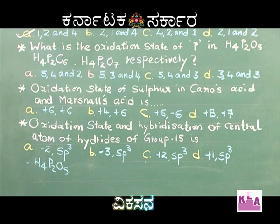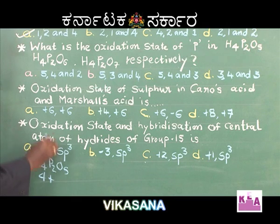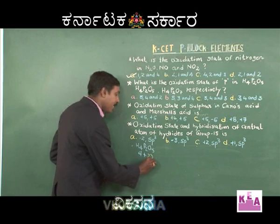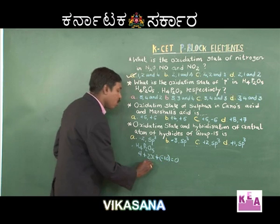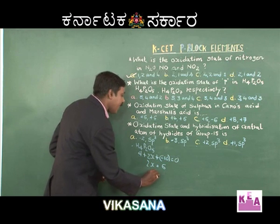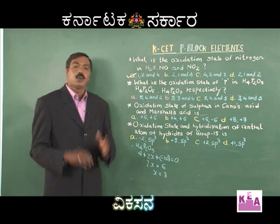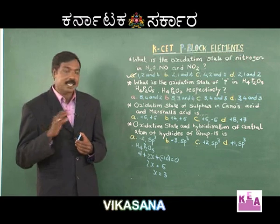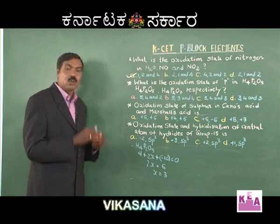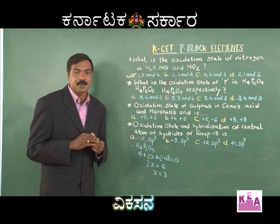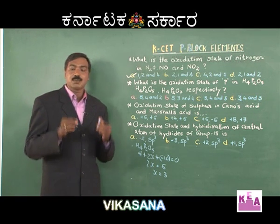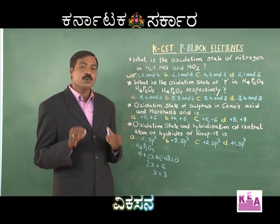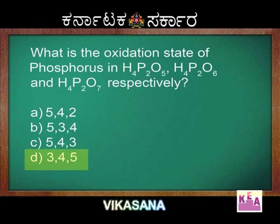The oxidation state of hydrogen is +1, so 1 × 4 = 4. For phosphorus: 4 + 2x + (−2 × 5) = 0, which gives 4 + 2x − 10 = 0, so 2x = 6 and x = +3. Going by the logic from the previous problem — find the first answer and look at the options. Plus 3 appears only in option D, so without a second thought, go for it. The answers are +3, +4, and +5.